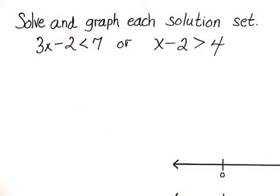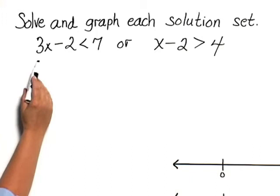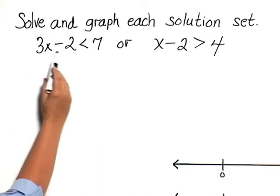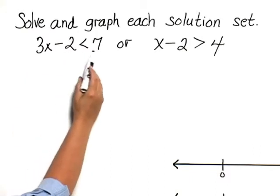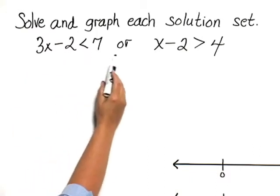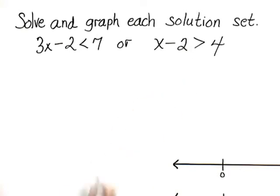Solve and graph each solution set. We have the compound inequality 3x minus 2 is less than 7, or x minus 2 is greater than 4.